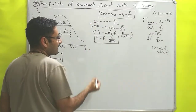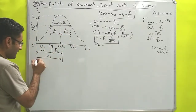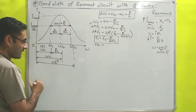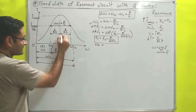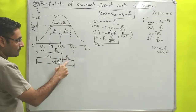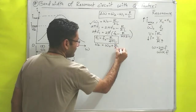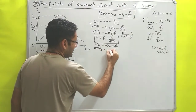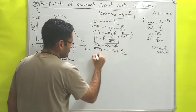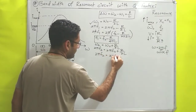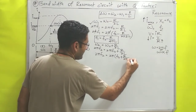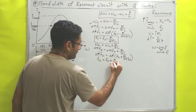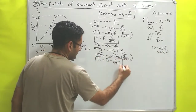Similarly, omega 2 = omega naught plus R/2L. Replacing omega with 2πF: 2πF2 = 2π(F0 plus R/2L × 1/2π), so the 2π terms cancel and F2 = F0 plus R/(4πL). That is the second frequency. Bandwidth is always considered between these two frequencies F1 and F2.